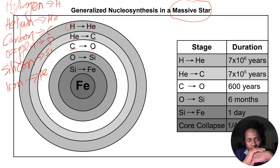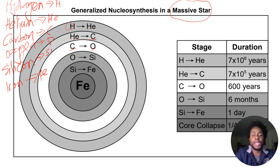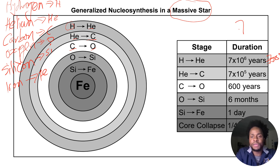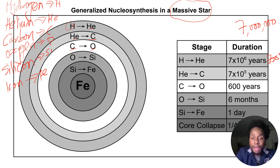In the first layer, hydrogen is being fused into helium. It takes the star about 7 × 10⁶ years to fuse all this hydrogen into helium. 10 to the power of six represents six zeros, so that is equivalent to seven million years — seven with six zeros. It takes a massive star about seven million years to fuse all of its hydrogen into helium.